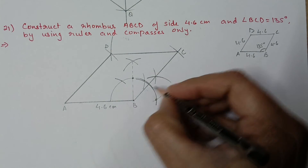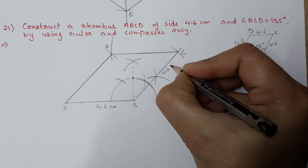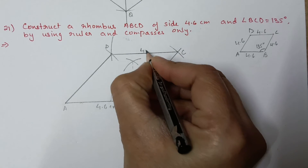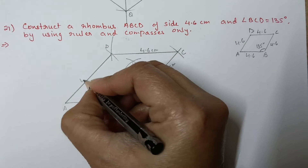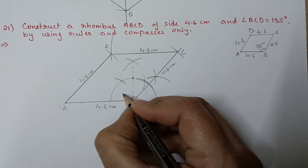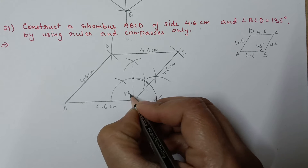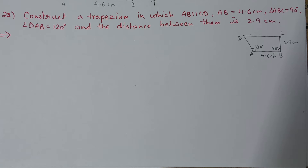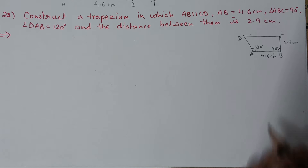Write the measurements: each side is 4.6 centimeters and this angle is 135 degrees. Figure for question 21 is ready. Next, question 22: construct a trapezium in which AB is parallel to CD.